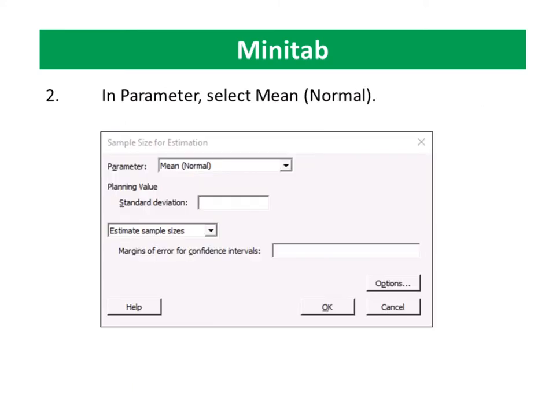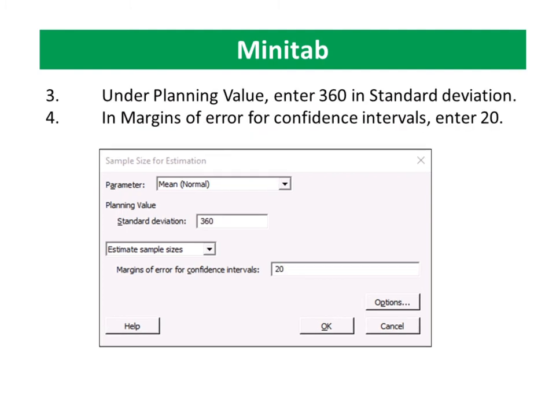In Parameter, select Mean Normal. Under Planning Value, enter 360 in standard deviation.